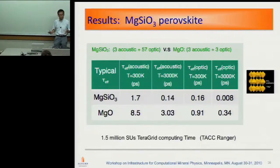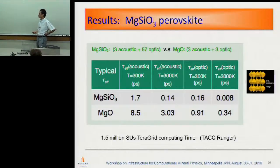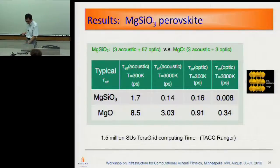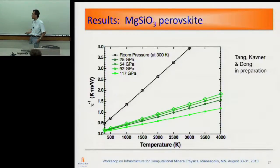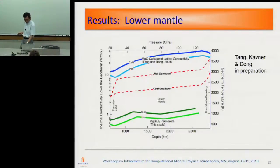MgO is only about 20 percent of the lower mantle — the dominant part is actually perovskite. So with Xiaoli at UCLA, we started calculations on perovskite. Because of the scaling effect we have to use the supercomputing facility. This is a comparison between the perovskite and the post-perovskite phases, and also with MgO. We find again a similar linear relation, and Xiaoli's latest data connects with earth science via the geotherm estimation. This work is still in preparation.